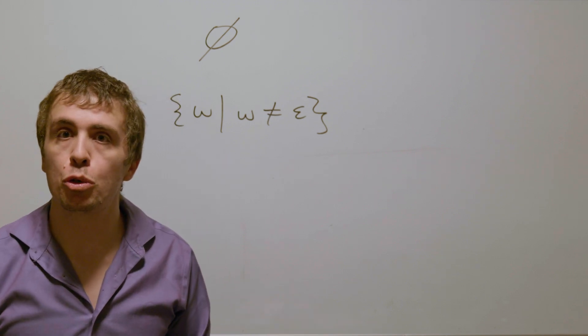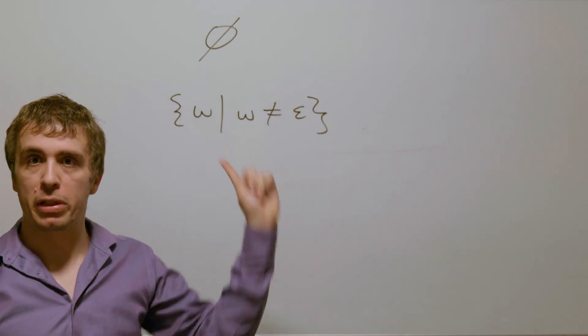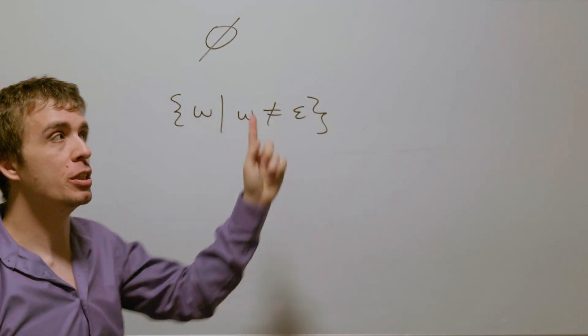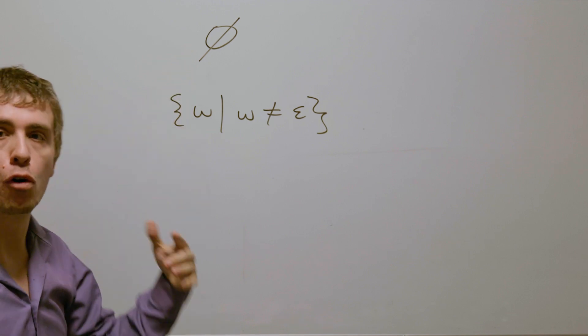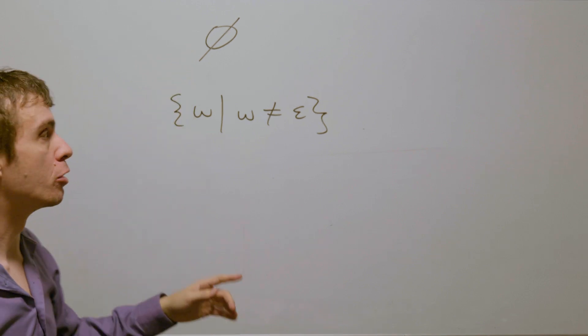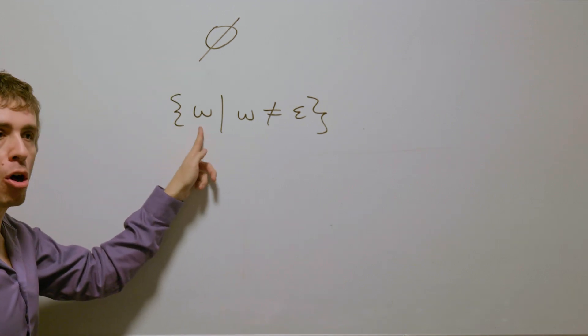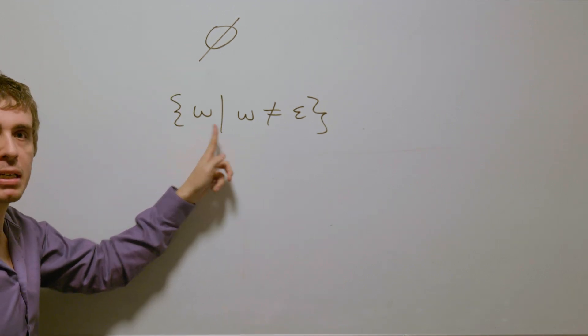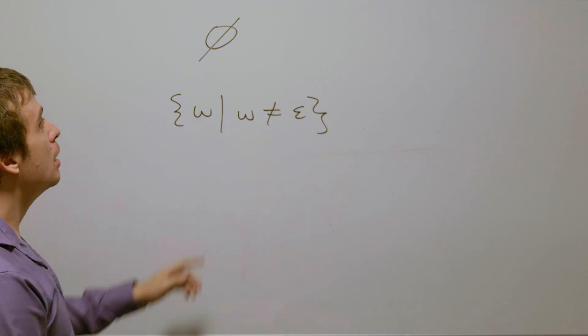Let's make two deterministic finite automatas for these two languages: namely the empty set over binary strings, and all binary strings that are not the empty string.